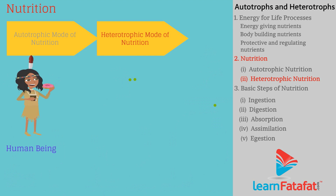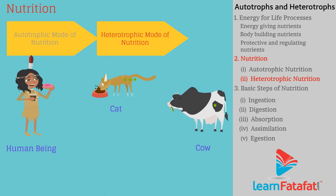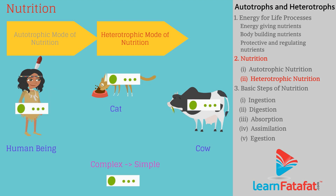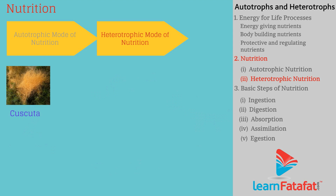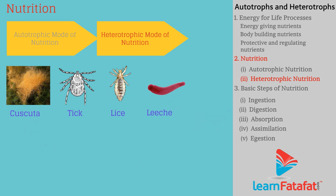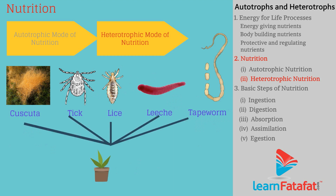Organisms like human beings, cats, and cows take whole food inside the body and then break down complex substances into simple substances inside the body. Some animals and plants such as Cuscuta, ticks, lice, leeches, and tapeworms derive nutrition from other plants or animals without killing them, but causing harm to the host plant or animal.